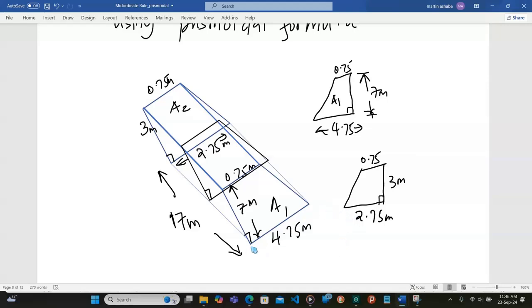So in here, we can see that it's 4.75 meters at the base here, and the base on the other side is 2.75 meters. The height here is 3 meters and the other side is 7 meters. The top width is 0.75 meters here, and also 0.75 meters here. So, how do we proceed?